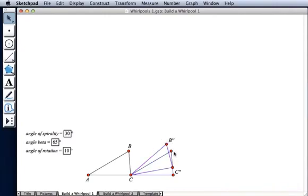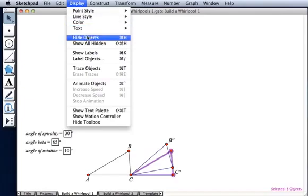Now that I've done this, I no longer need to see the triangle that I translated. So I'll select its vertices and sides and choose Display Hide Objects.